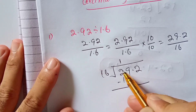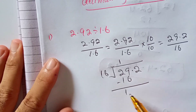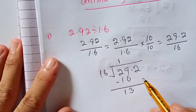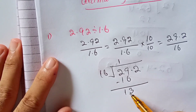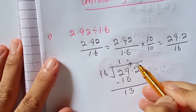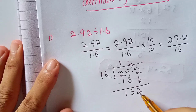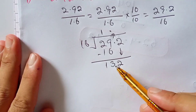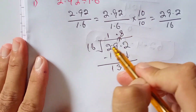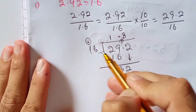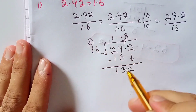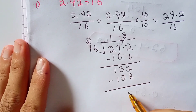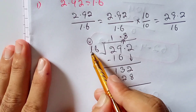Subtract 16 from 29, the remainder is 13. Since 13 is less than 16, we bring down the 2 near 13 to make it 132. We carry the decimal point to the quotient and bring down the 2, giving us 132. How many times does 16 go into 132? 8 times 16 is 128. Subtract 128 from 132, the remainder is 4.